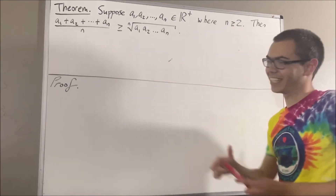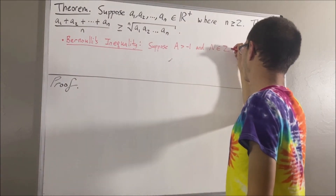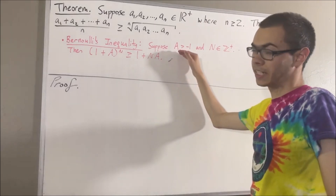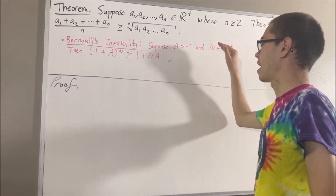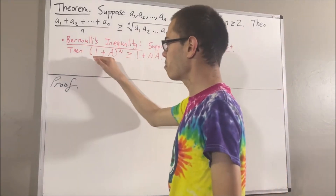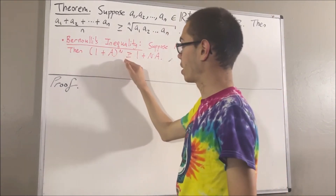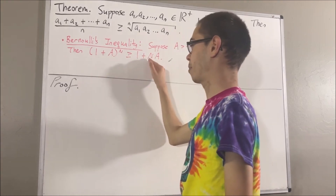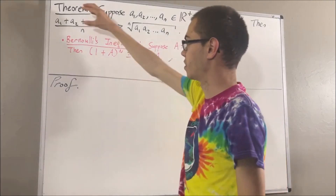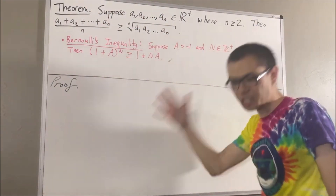Bernoulli's inequality. Suppose capital A is a real number greater than negative 1, and capital N is a positive integer. Then, 1 plus capital A to the power of capital N is greater than or equal to 1 plus capital N times capital A. So now let's get into proving this theorem. To start out the proof, we are going to use induction.